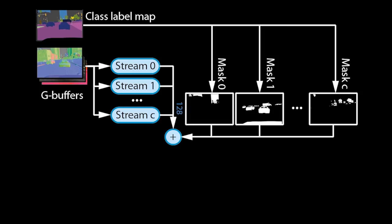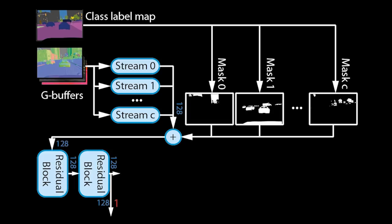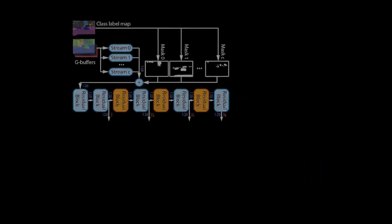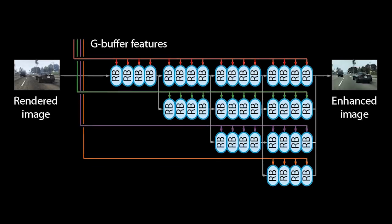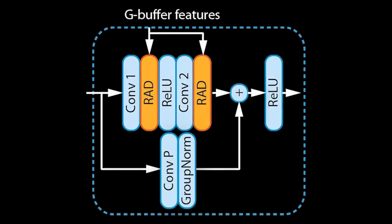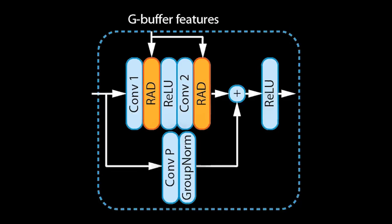The resulting feature tensors are further processed by residual blocks, which output tensors at multiple scales. The enhancement network is based on HR-Net, which processes images at multiple scales in parallel. Each scale of the feature tensors matches a scale in the network. Within the residual blocks, we replace the batch normalization layers with our own Rendering-Aware Denormalization blocks, or RAD for short. The RAD layers modulate features based on the rendering information in the G-buffer feature tensors. For more details, we refer to our paper.